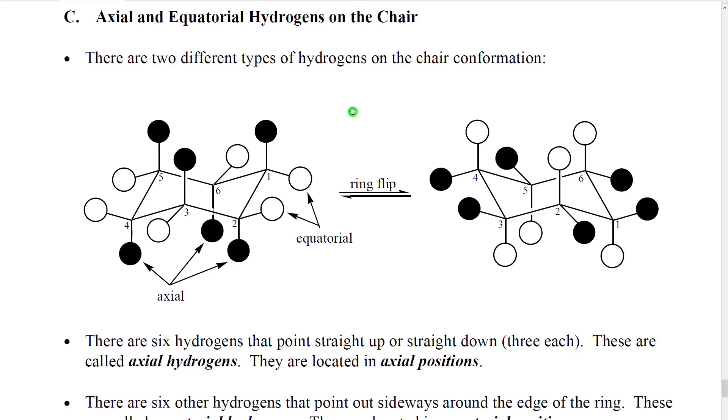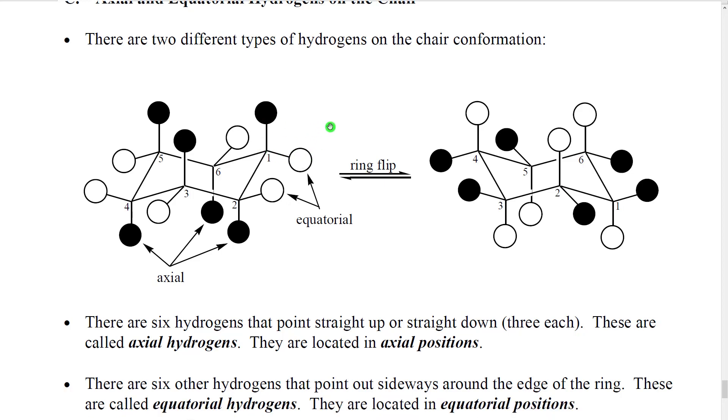However, if we look more generally, we could replace this hydrogen with another group. And so this position, this location would be better called an axial position. We had an axial location in the molecule, and this would be an equatorial position.